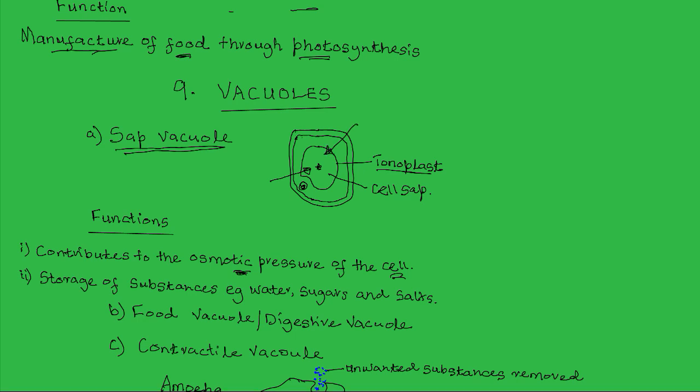As more and more water gets into the cells, the sap vacuole will expand outward, pushing the cytoplasm against the cell membrane and the cell wall. This outward pressure, as a result of the absorption of water, is what makes the cells turgid. By contributing to the osmotic properties of the cell and enabling the cell to absorb water, thereby become turgid, the sap vacuole plays a very important role in offering support to the cell and the entire plant.